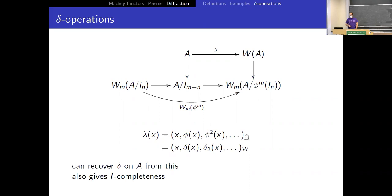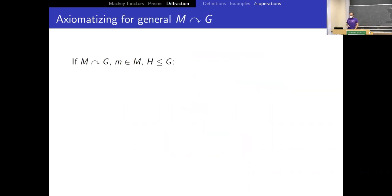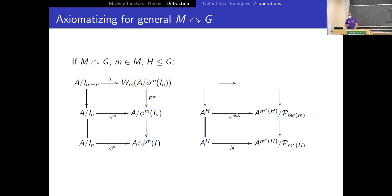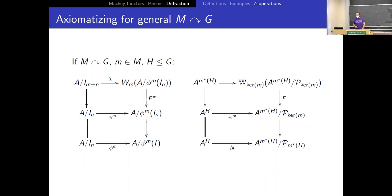I believe you can phrase all of this in a way that works for the general setup: a monoid M acting on a compact Lie group G, generalizing the case where G is CP^∞ and M is ℕ. Thank you.